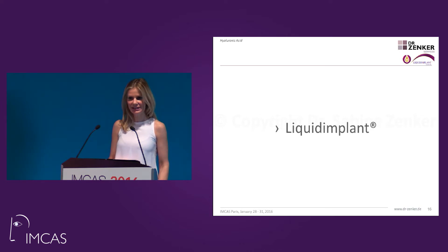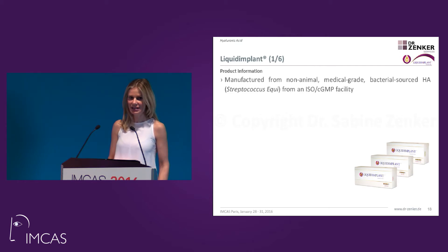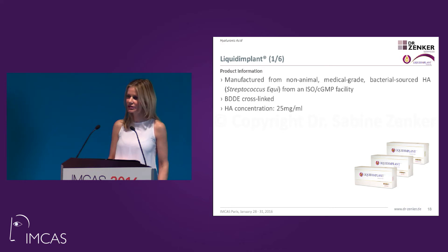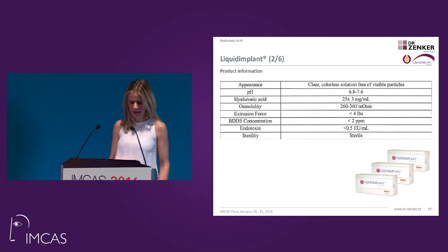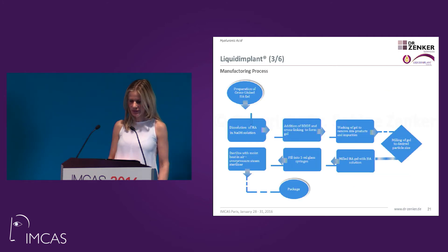I have the honor to present Liquid Implant today, which is a cross-linked hyaluronic acid manufactured from non-animal, medical grade hyaluronic acid, cross-linked with a concentration of 25 milligrams per ml. These fine particles are blended in an uncross-linked linear HA to enhance injectability. The manufacturing process is basically a complex process of dissolving the HA, then milling the gel, and finally packing it into glass syringes for the doctor's use.